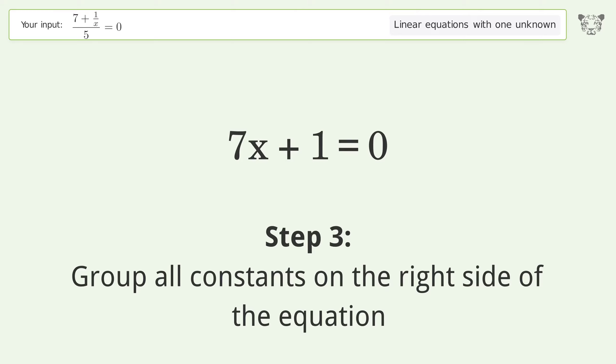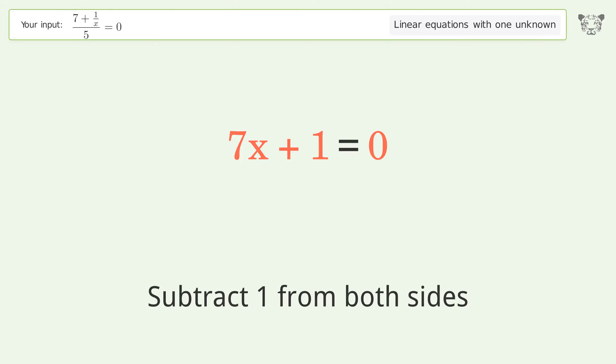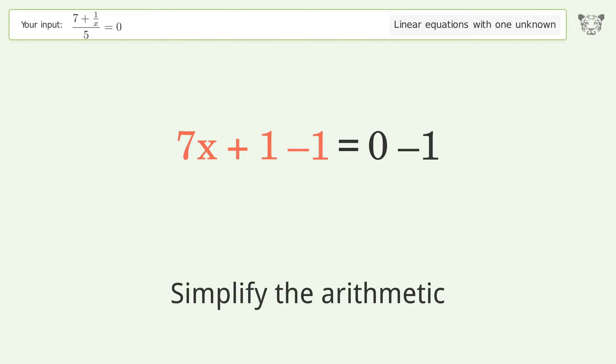Group all constants on the right side of the equation. Subtract 1 from both sides. Simplify the arithmetic.